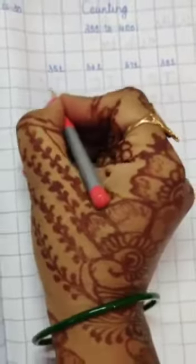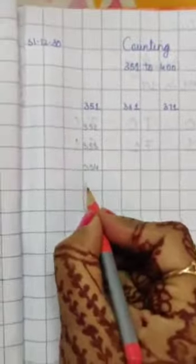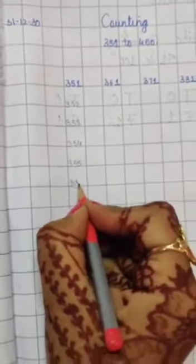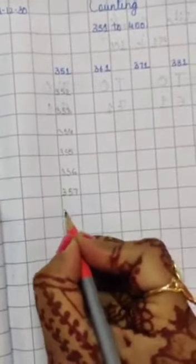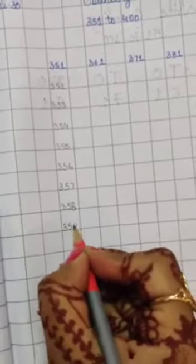Here it's 351. After that, 352, 353, 354, 355, 356, 357, 358, 359, 360.